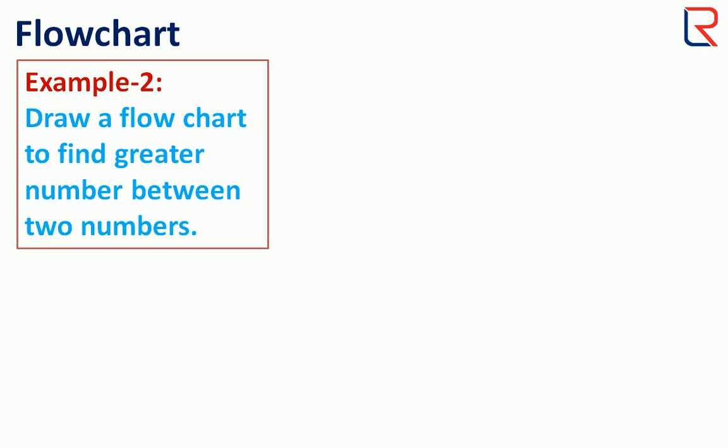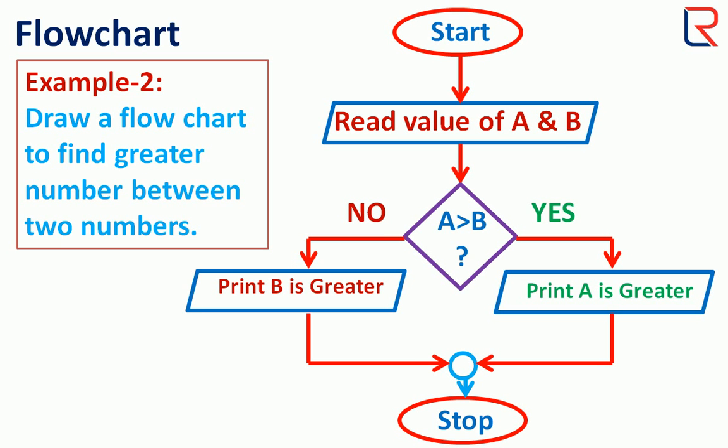We have another example to find the greater number between two numbers. In this question, we need to take a decision to find out whether number one or number two is greater, so we need a decision box. Start with terminal symbol, take input as usual, and check which number is greater. The condition is A is greater than B. If the condition is true, then print 'A is greater number,' otherwise 'B is greater number.'